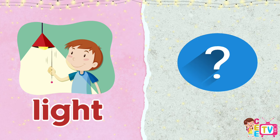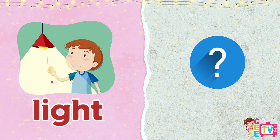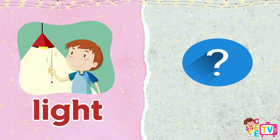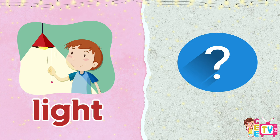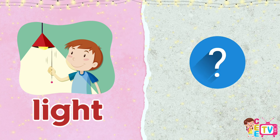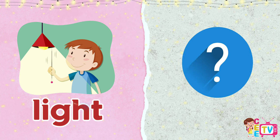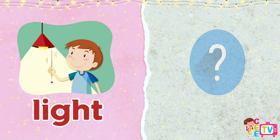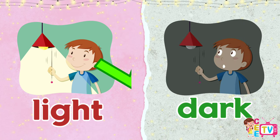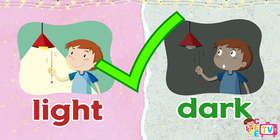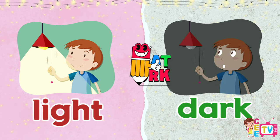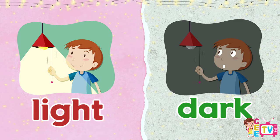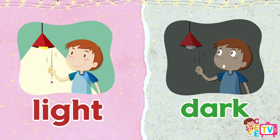What is the opposite of light? The opposite of light is dark. You are correct. The opposite of light is dark.